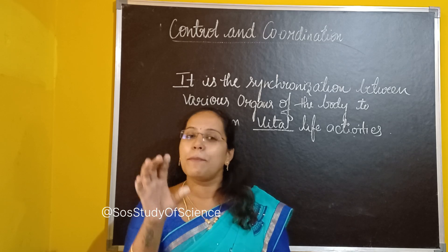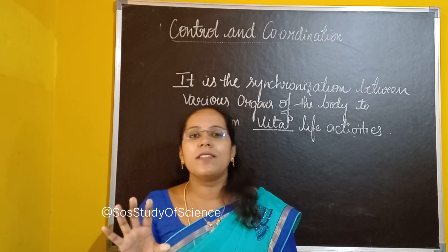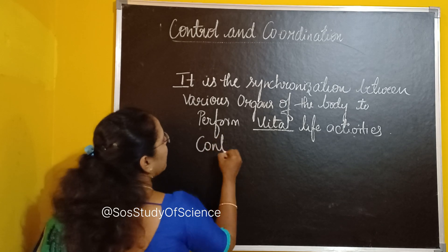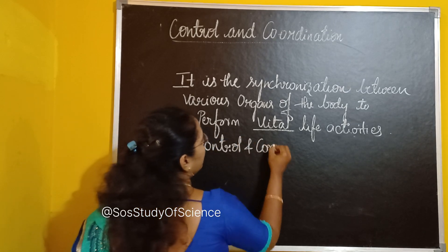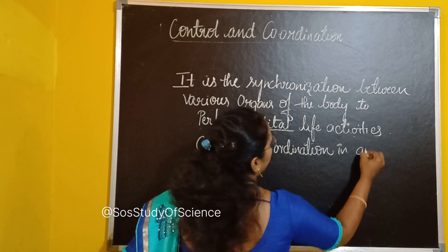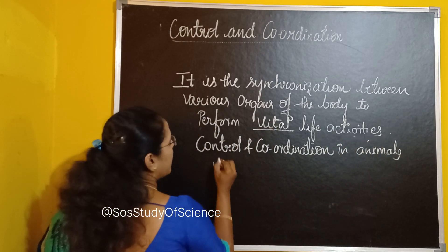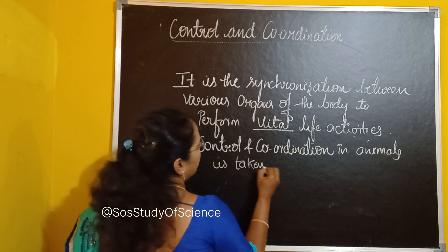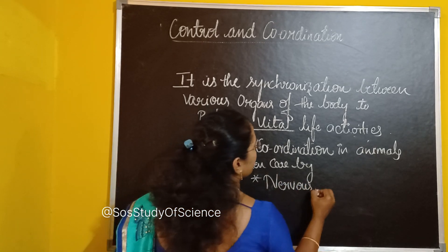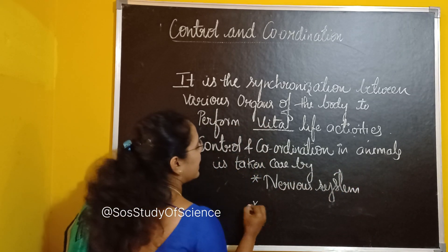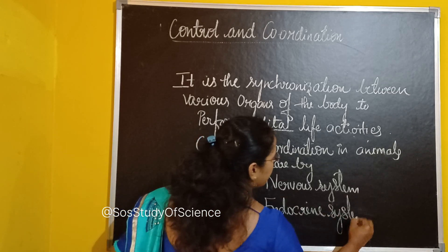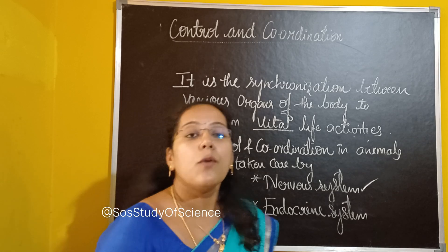If you find any concepts you don't understand, please note those points in the comment area and I will try to clear those doubts in the upcoming sessions. So please note down: control and coordination in animals is taken care of by two important systems — one is the nervous system and the second is the endocrine system. We will first talk about the nervous system.